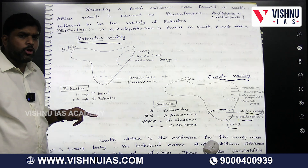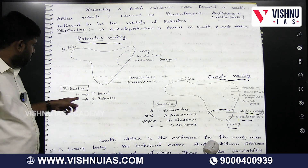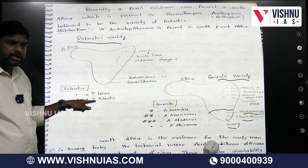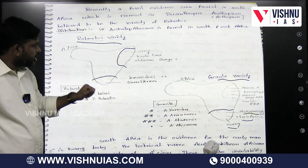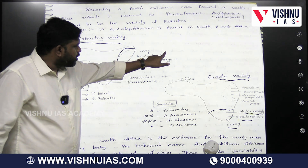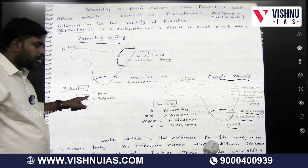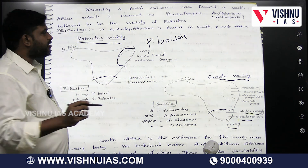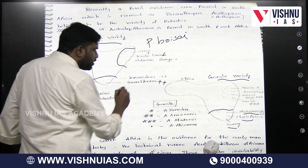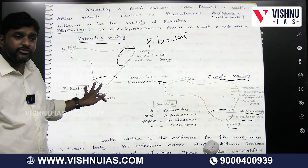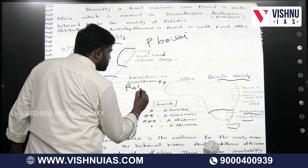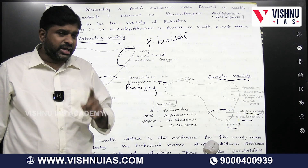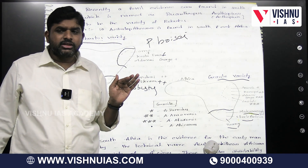Coming to the Robustus variety: we have Paranthropus Robustus and Paranthropus Boisei, shown as cross marks on the map. Paranthropus Boisei — one cross mark — is found at Omo, Koobi Fora, and Olduvai Gorge in East Africa. Paranthropus Robustus — two cross marks — is found at Swartkrans and Kromdraai in South Africa. So all Boisei varieties are found in East Africa, and all Robustus varieties are found in South Africa.